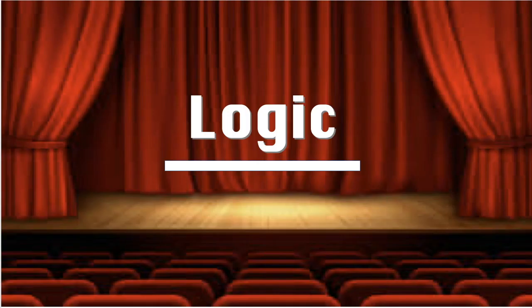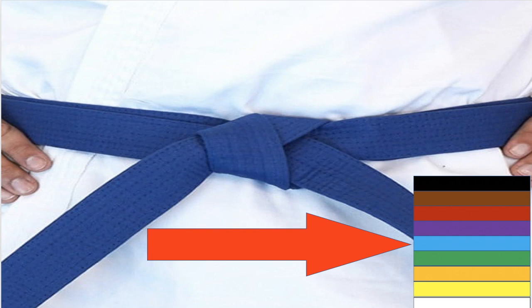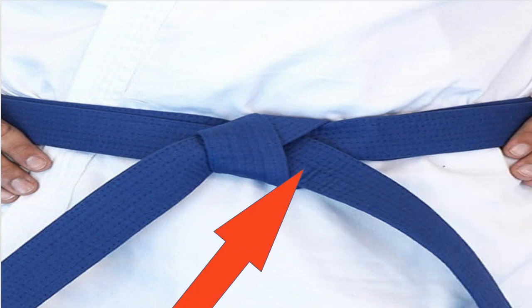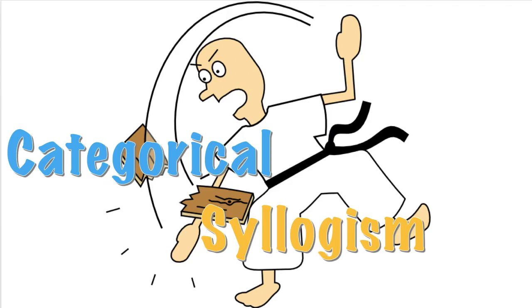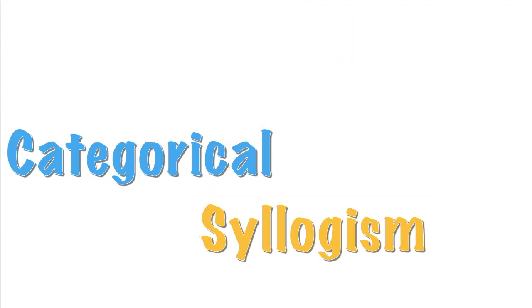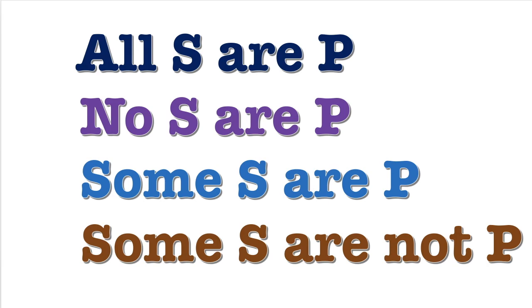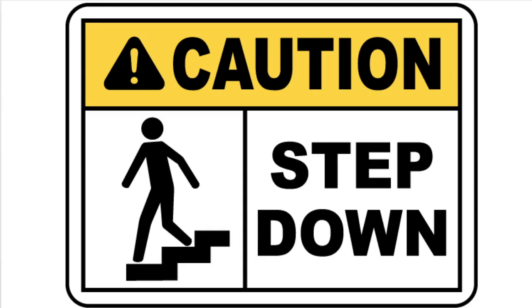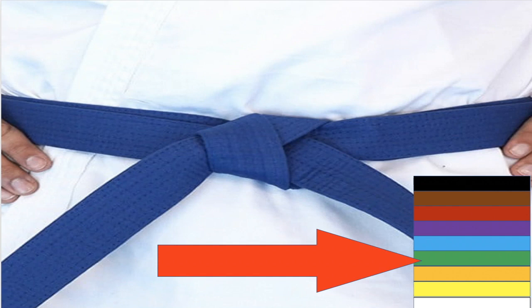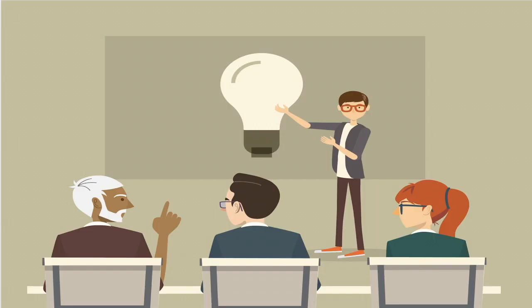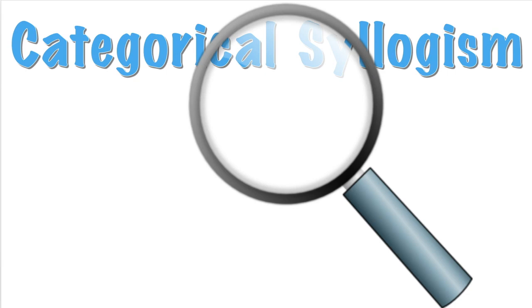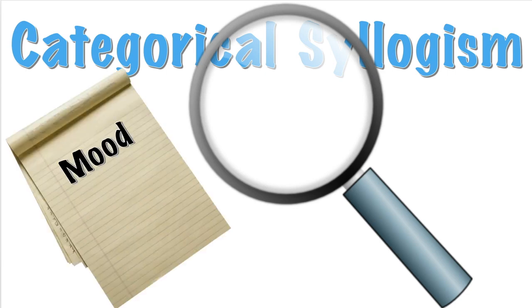Ladies and gentlemen, welcome back to Logic. In this video of the video playlist, you will be using your blue belt in Logic to master categorical syllogisms. Now a categorical syllogism is a kind of deductive argument that is made with categorical propositions. If you don't know what a categorical proposition is, please go down a level in this video series to the green belt level. In this video, you will learn how to make a categorical syllogism into standard form and then test it for validity by using a cheat sheet about the mood and figure. Let's begin.